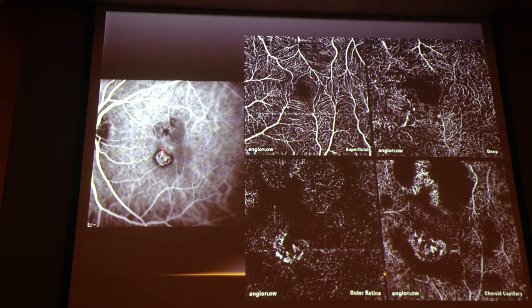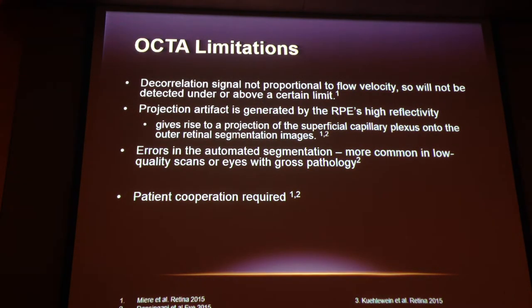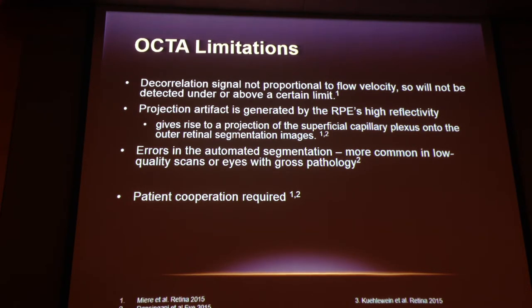One of our patients shows a nice RAP lesion on the ICG angiogram. On the OCT angiogram superficial layers: nothing. Deep plexus: a hint. Then a nice tuft in the outer retina as well as the choriocapillaris. Limitations for OCTA in RAP are the same as those that apply to all OCT angiograms: patient cooperation is needed, artifacts are possible, and segmentation errors occur whenever there's anatomical distortion. Flow velocity is something we all have to be conscious of — if it's outside the detectable range, we may miss the lesion. We need to share our experiences as technology advances.